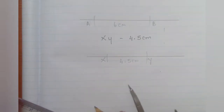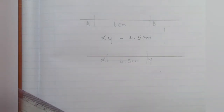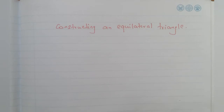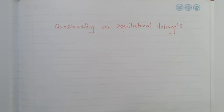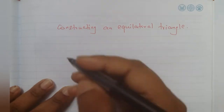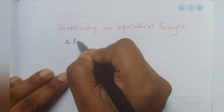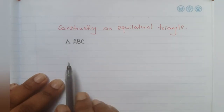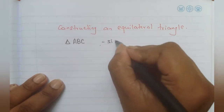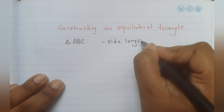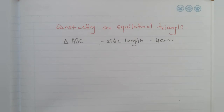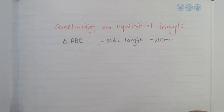That's how we draw a straight line segment. Next we will be learning to construct an equilateral triangle. An equilateral triangle has all three sides the same length. Let's draw equilateral triangle ABC — a triangle must be named with three capital letters — with each side length of 4 centimeters.